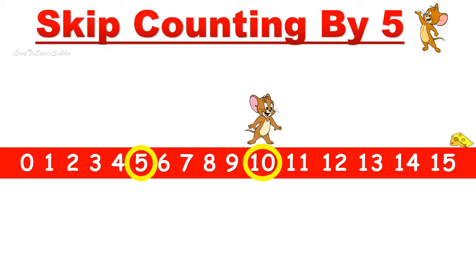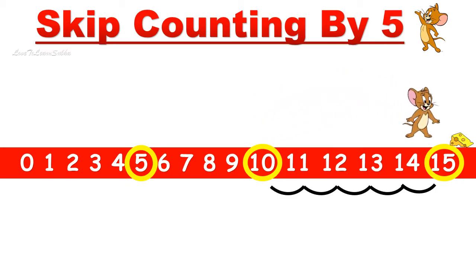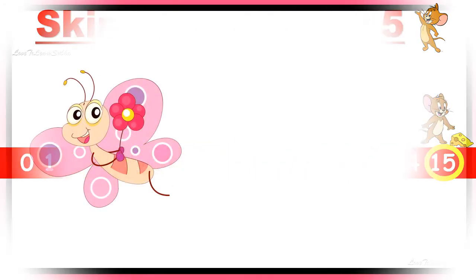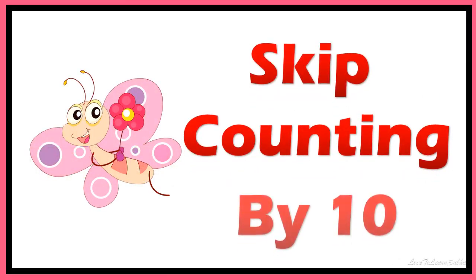From ten, Jerry has to skip count by five and move forward to reach his cheese. Counting: one, two, three, four, five — the number is fifteen. Jerry jumps on number fifteen and reaches his cheese. Little Jerry is happy about reaching his cheese! I hope you have understood skip counting by five. Now let's move on to the next one.